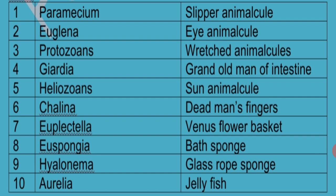Chalaina is a sponge and it is called Dead Man's Fingers. Euplectella is another sponge called Venus Flower Basket. Euspongia is called Bath Sponge. Hyalonema is called Glass Rope Sponge because of its transparency — it looks like a rope made of glass.